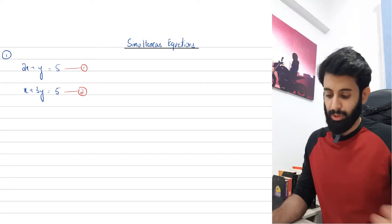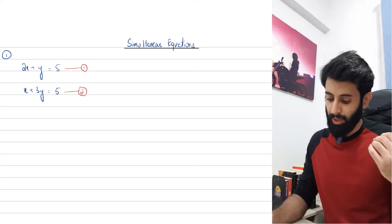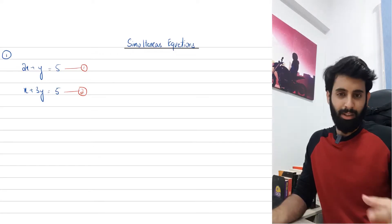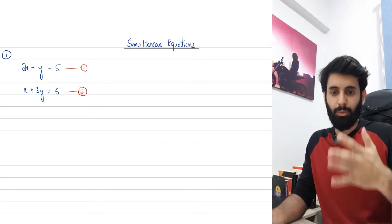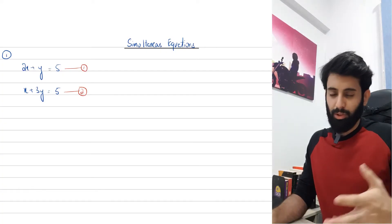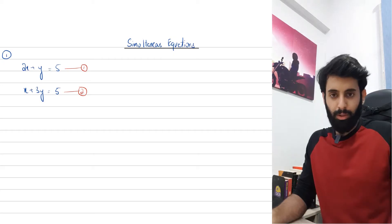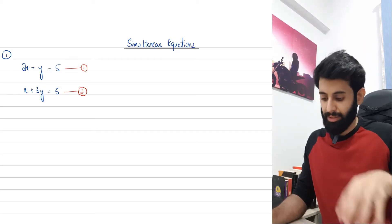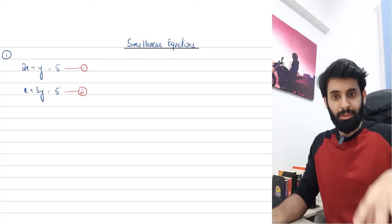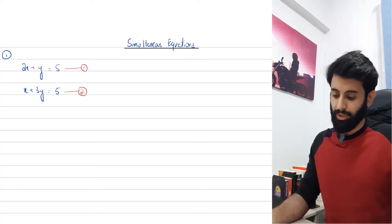We have two equations: 2x plus y equals 5, and x plus 3y equals 5. The first thing you want to do is make sure that the two equations are written nicely — x first, then y, then the constant. It doesn't really matter whether it's x first, but make sure the order is the same. You could have y first then x then the constant, but ensure one unknown, then the other, then an equals sign, then a constant, and the same for the other equation.